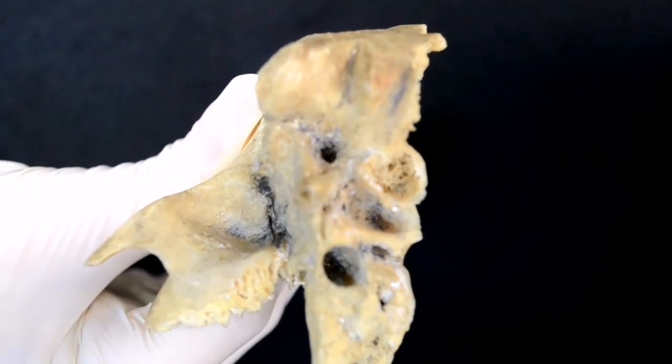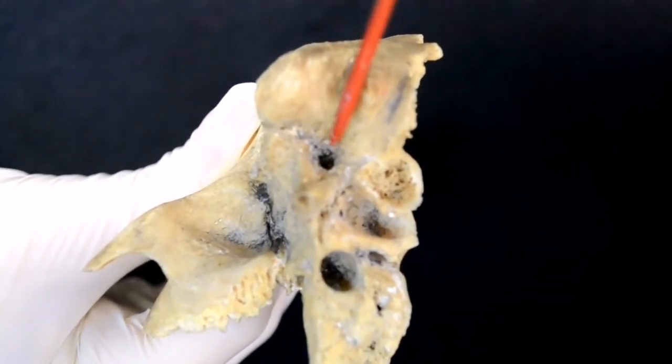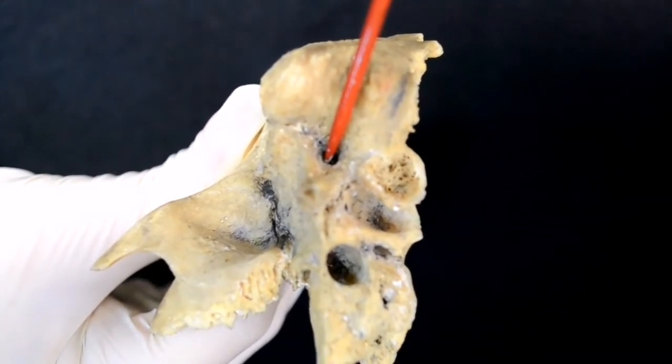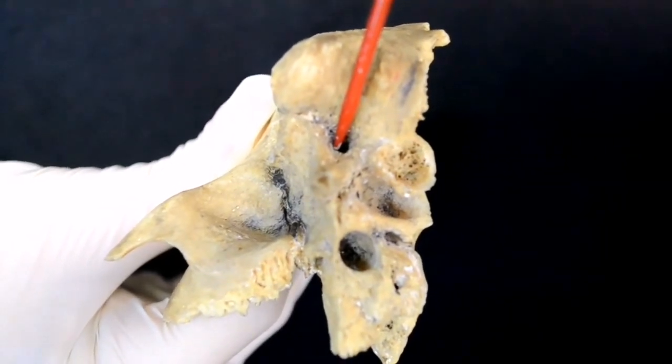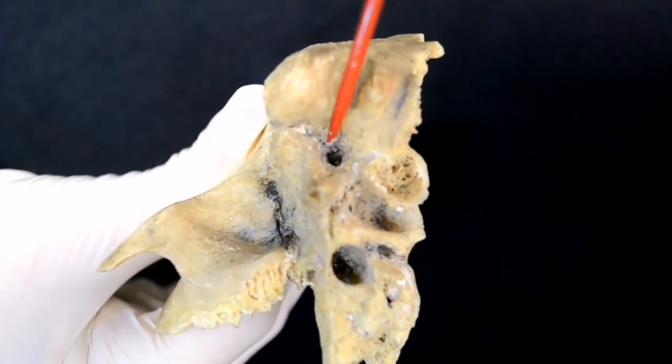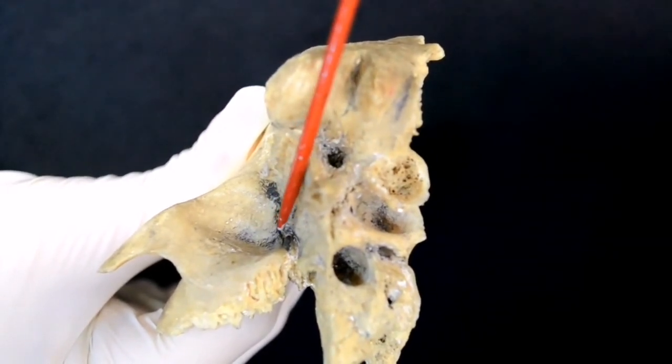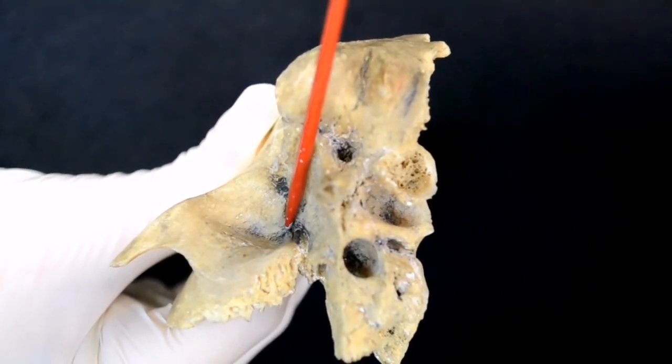Canaliculus chordae tympani originates from the external wall of the facial canal, 2mm above the stylomastoid foramen. It goes upward and forward, enters the tympanic cavity, and leaves through the fissura petrotympanica.